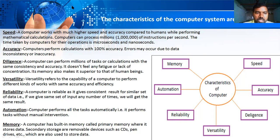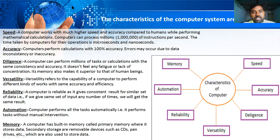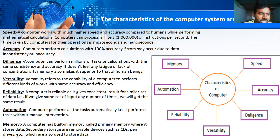Speed is one key characteristic. A computer can process millions of data instructions per second. Data operations are performed in microseconds and nanoseconds. Accuracy means the computer does not make errors due to data inconsistency. It always gives an exact output — for example, 10 plus 2 always gives 12, never 13.